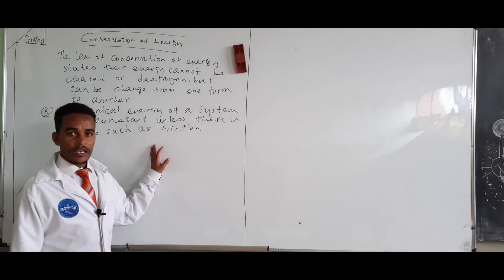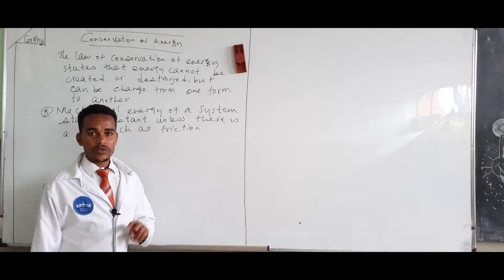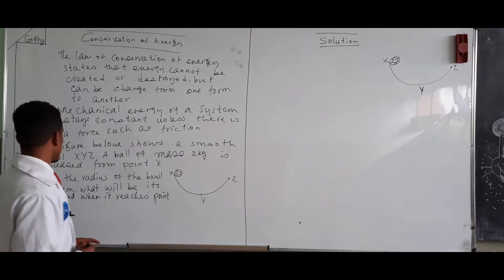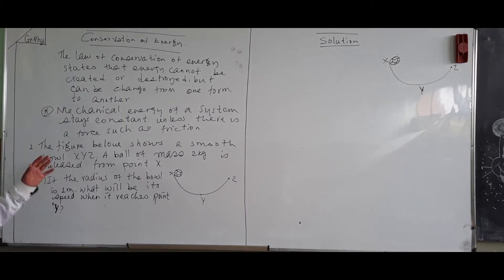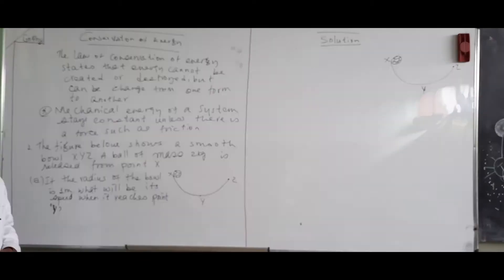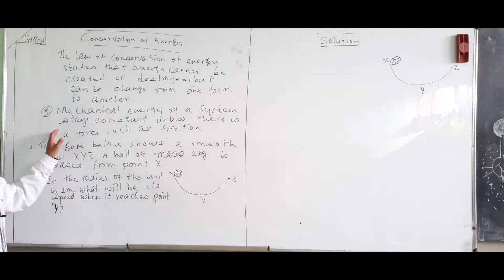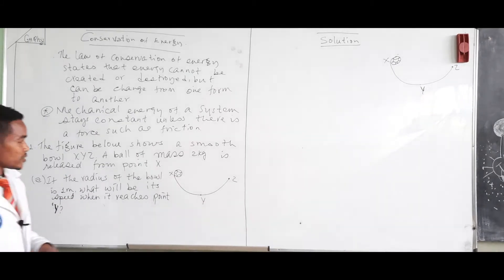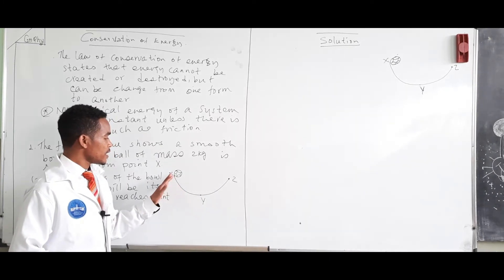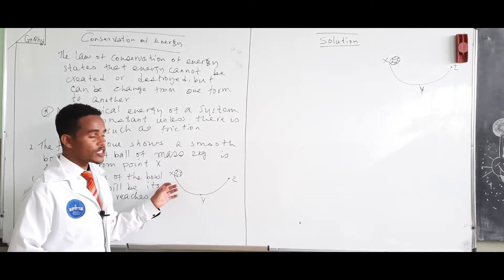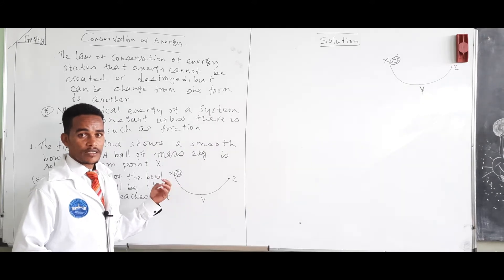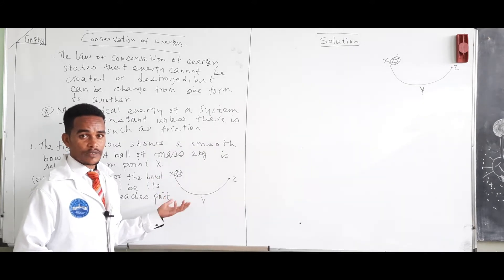To confirm this we are going to do two examples. To solve this problem we will apply the law of conservation of energy, especially the law of conservation of mechanical energy. According to the law of conservation of mechanical energy, the energy of a given system always stays constant unless there are dissipative forces such as friction.